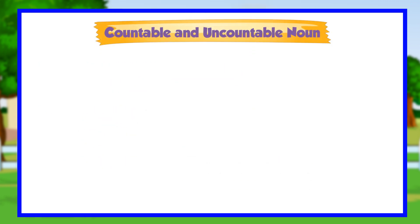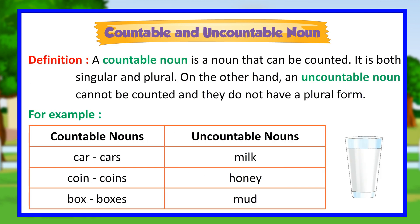Countable and uncountable noun. Definition: a countable noun is a noun that can be counted. It is both singular and plural. On the other hand, an uncountable noun cannot be counted and they do not have a plural form. For example, countable nouns: car, cars; coin, coins; box, boxes. Uncountable nouns: milk, honey, mud.